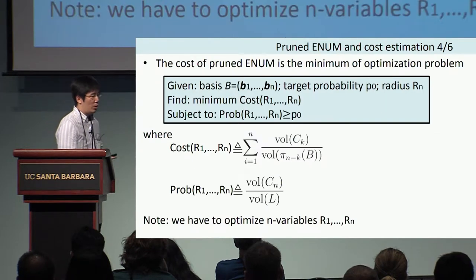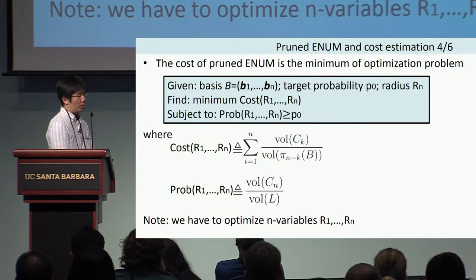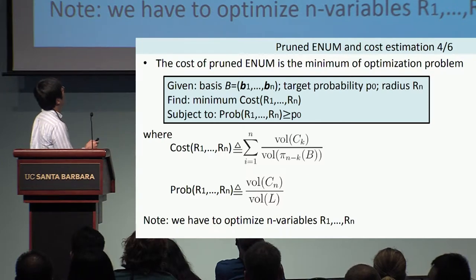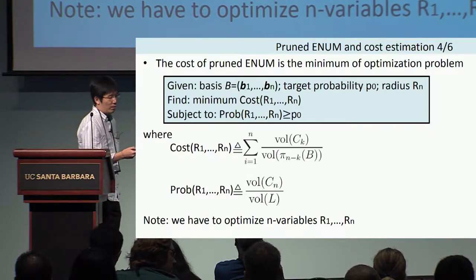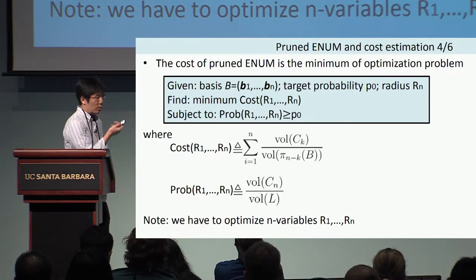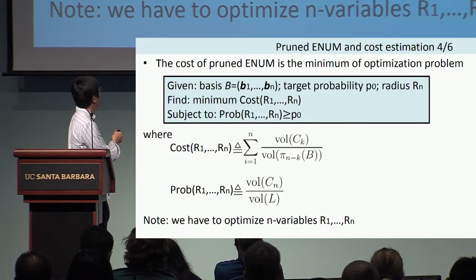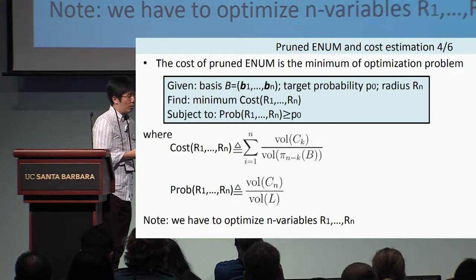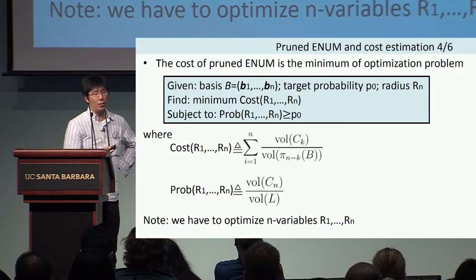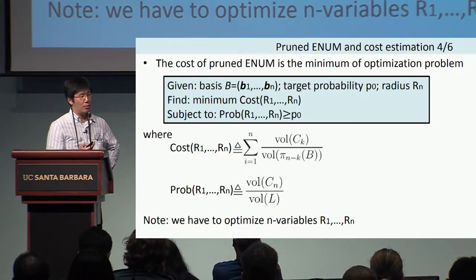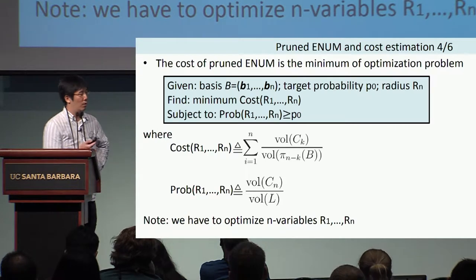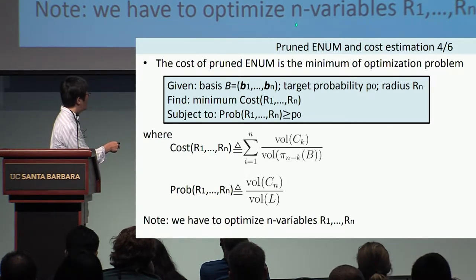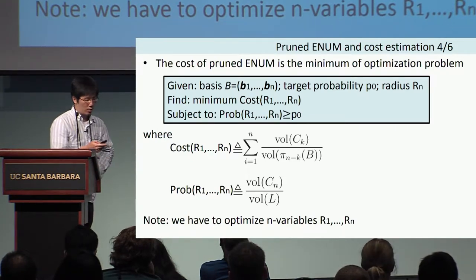With this preparation, the cost of pruned enumeration is given by the minimum of an optimization problem, where the cost and probability are defined accordingly. To find the cost of the pruned enumeration, we need to solve this optimization problem by optimizing variables R1 through Rn — which is not an easy problem.